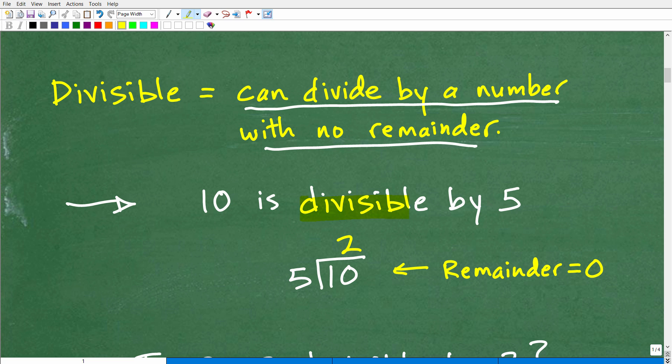Let me show you an example because the example is going to be clearer than my description. Examples are often the best way to learn things. So 10 is divisible by 5. What does that mean? Well, 10 is divisible by 5 because we can take 10 and divide it by 5. The answer, of course, is 2. But the remainder is 0. So when we can divide a number and there is no remainder, then that situation is divisible.